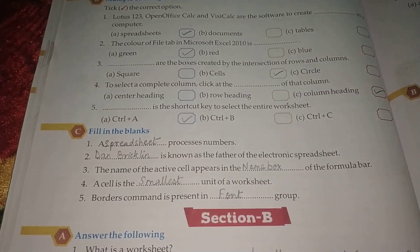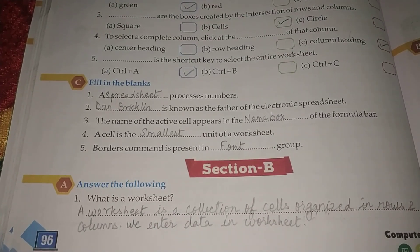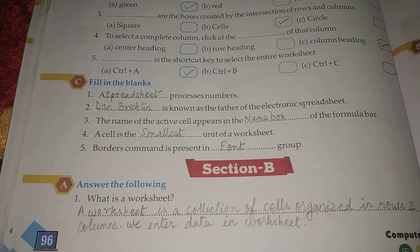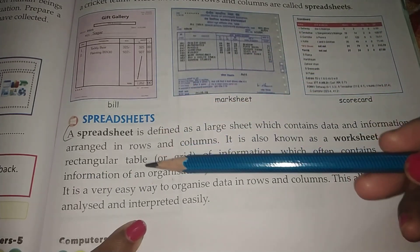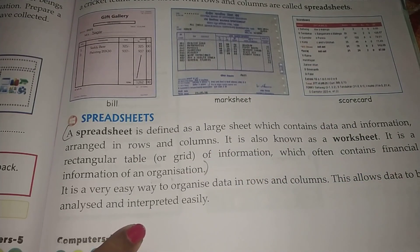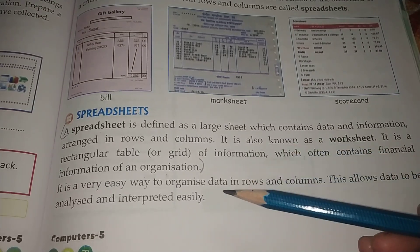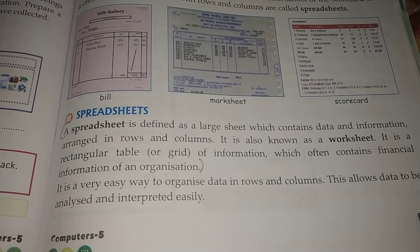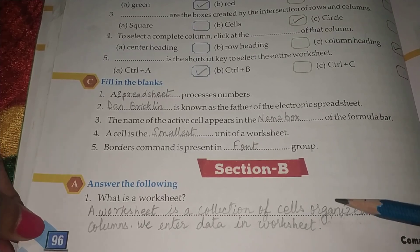Now let us see section B — question answers. What is a worksheet? A worksheet is a collection of cells organized in rows and columns. We enter data in a worksheet. You will also add these two lines: it is a very easy way to organize data in rows and columns, and this allows data to be analyzed and interpreted easily. Also write: a spreadsheet is also known as a worksheet.